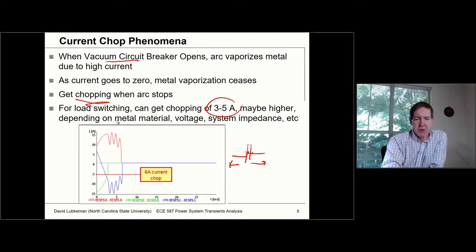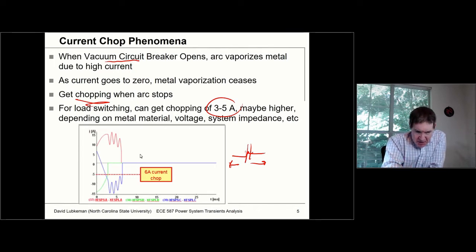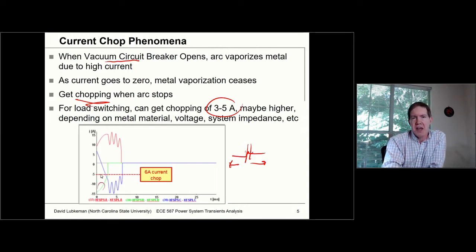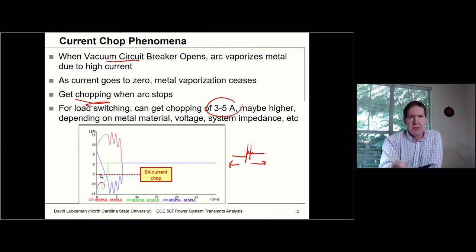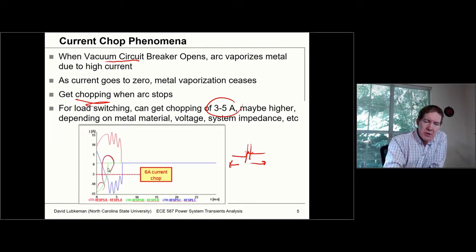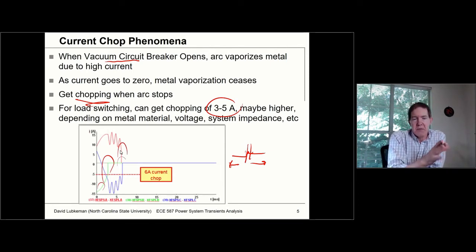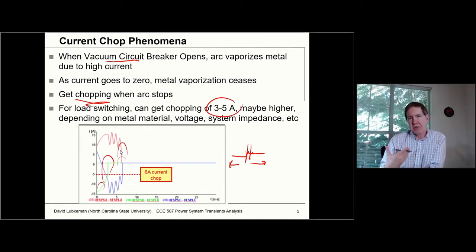This shows a field measurement where you're getting some current chop. You see the three phases — A, B, and C. You see this interruption occurring first on phase A; the currents are 120 degrees apart so one phase hits zero first. But what you see instead of waiting until natural current zero is the current getting chopped at about the six amp level. He shows that this phenomenon could actually cause damage to transformers.